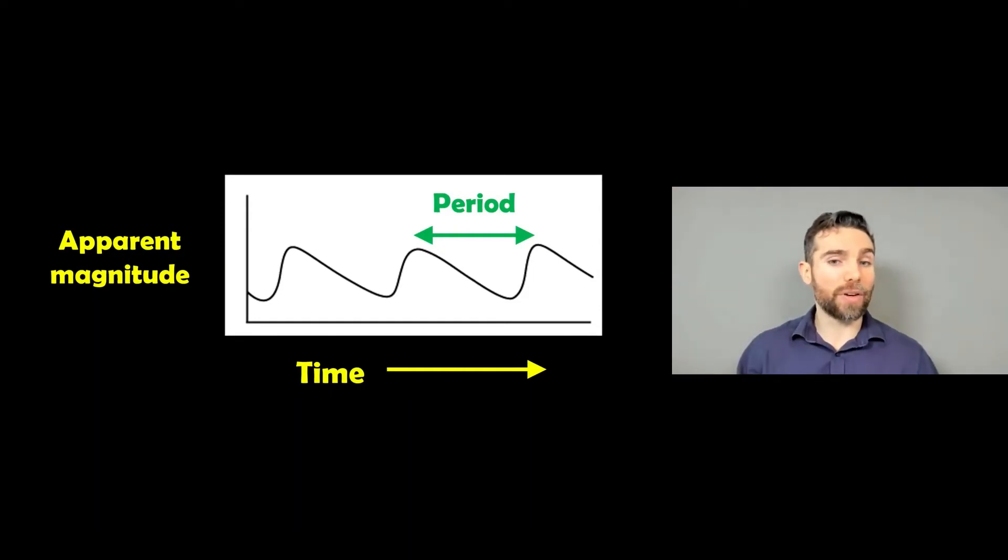And we can measure that period by looking at the time between the maximum brightness and then the maximum brightness again. So that's the period of its pulsation period, which is actually very useful to know. We can work that out quite easily.